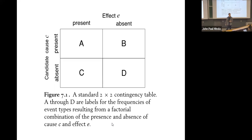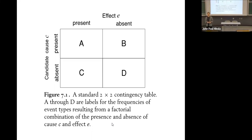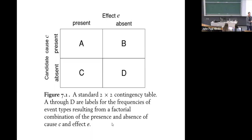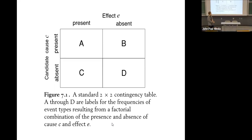You expect cells A and D to have large numbers. You don't want to see lots of cases where the cause is present and the effect doesn't happen, or where the effect occurs without the cause. With the light switch: flicking it on and the light comes on is cell A; not flicking it and the light stays off is cell D; turning the switch on and the light not coming on, or the light coming on by itself, are cells you want to be small. If A and D are large numbers, you have good reason to suspect a causal relationship.